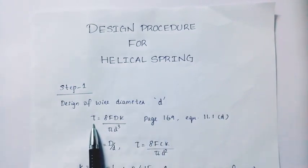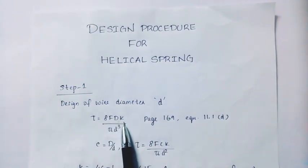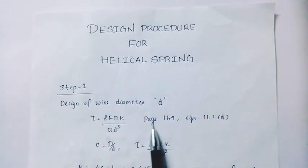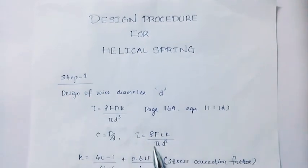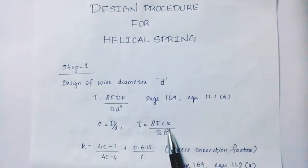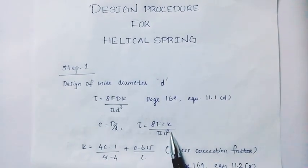Tau equals 8FDK divided by pi d squared. This is page 169, equation 11.1d. Now c divided by d, tau equals 8FCK divided by pi d squared.